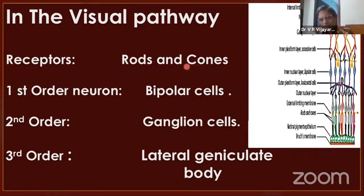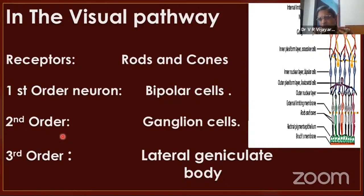Light falls on the receptors — the rods and cones — the impulse starts. It goes to the bipolar cells, which are the first-order neurons in the inner nuclear layer. From there through the inner plexiform layer it comes to the ganglion cells. The ganglion cell is the second-order neuron. From the ganglion cell, axons form the optic nerve, pass through the chiasma and the tract, and go to the lateral geniculate body, which has the third-order neurons. The optic nerve is a misnomer — it is not a nerve at all; it is a white fiber tract connecting the second to the third order neuron.